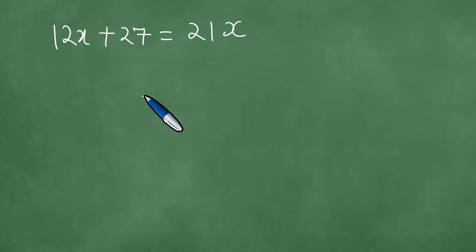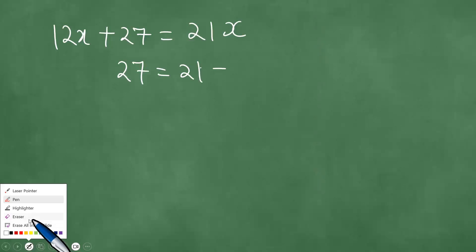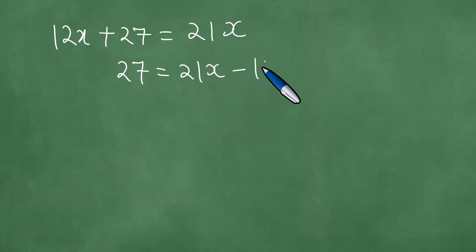You can write these as 21x minus 12x, which means 27 equals 9x. Divide both left and right by 9, getting 3 equals x.